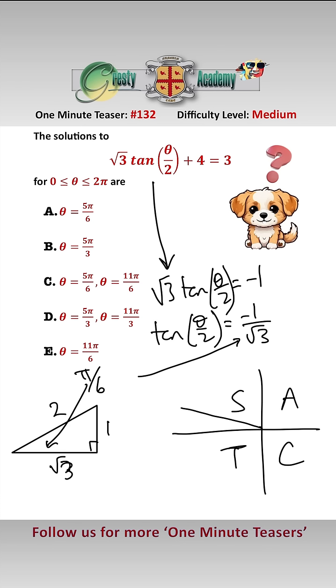And tan is negative in this quadrant here and in this quadrant here. So therefore, this angle here is 5 pi over 6 and this angle here is 11 pi over 6.